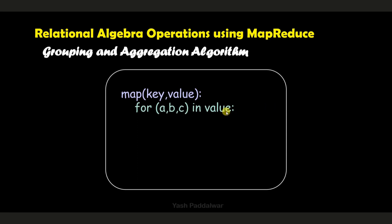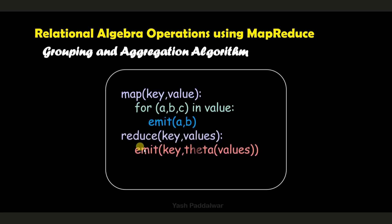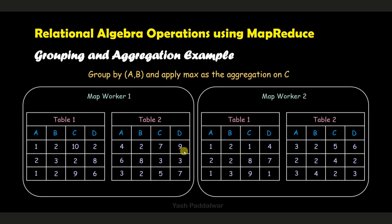We'll be doing this with the help of the MapReduce algorithm. Under the map task, first we need to iterate over all the values. Let's say we have representatives of attributes as A, B, and C. A is the set of attributes for the grouping operation, B is the set of attributes for the aggregation operation, and C is the set of attributes that we discard. Under the map task we emit A and B as the key-value pair. Under the reduce task we emit the key as attribute A, and the value as theta applied to the B values — meaning we perform the aggregation operation on those elements in the value section.